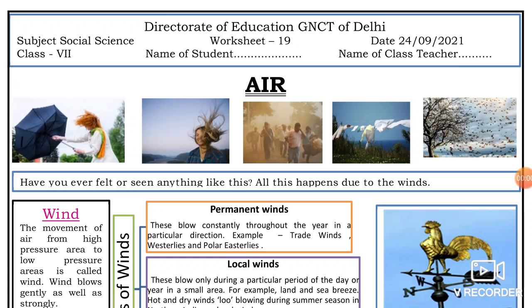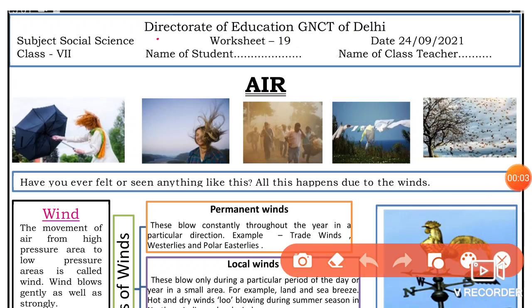Hi guys, welcome to your YouTube channel with Aman Kulmi. Today we are with the Director of Education in the GN City of Delhi. This is Worksheet number 19, for class 7th grade. The subject is Social Science. Date is 24 September 2021.